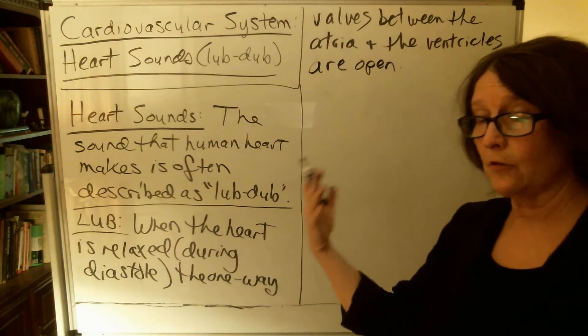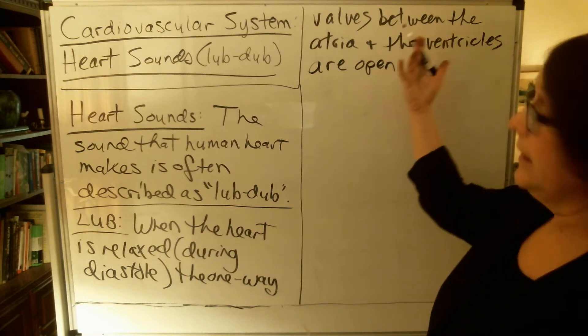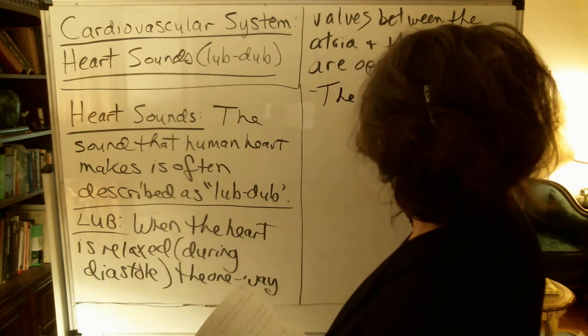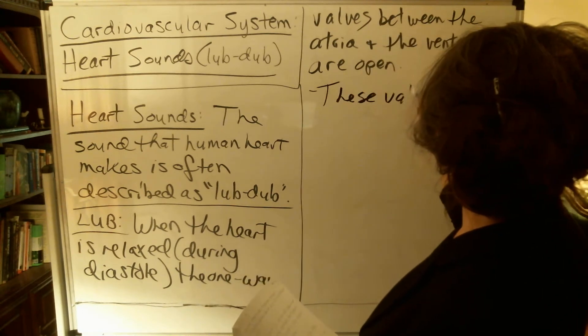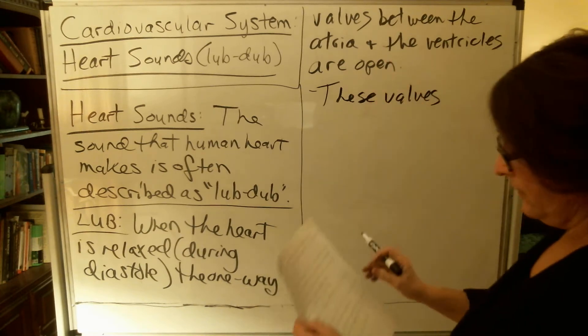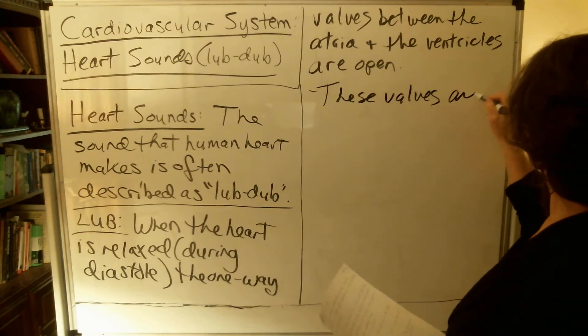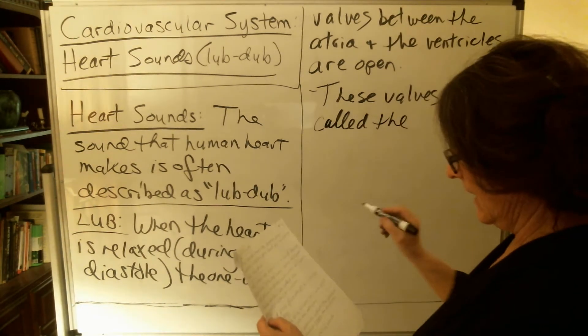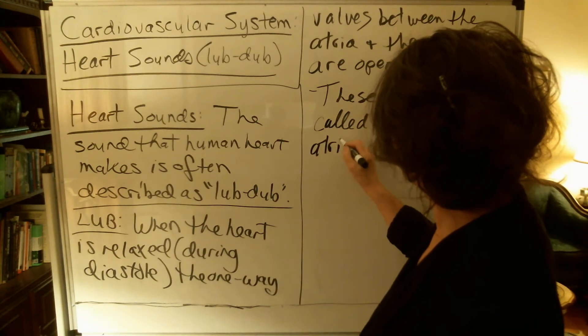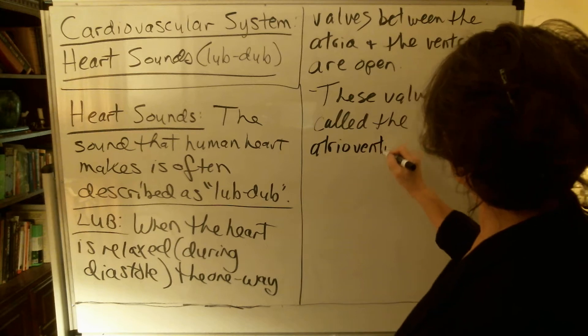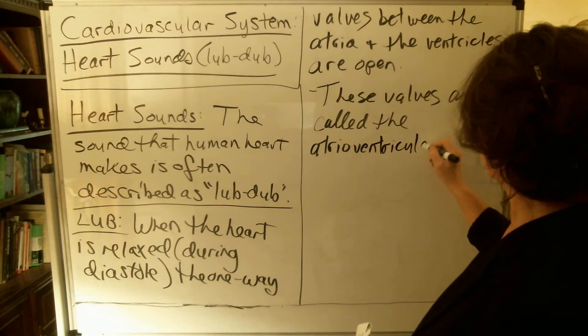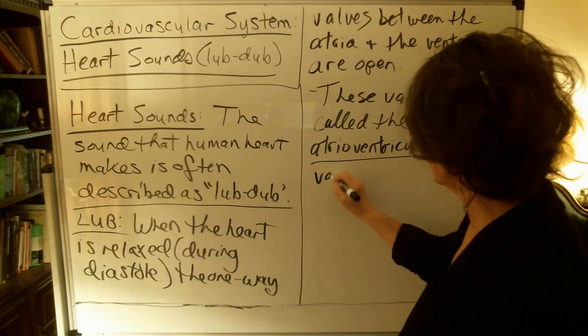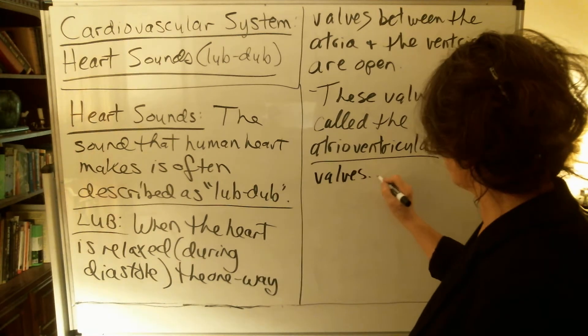So, the heart's relaxed, you have blood coming into it, and all of these valves are open. These valves between the atria and the ventricles are called, very handily, the atrioventricular or AV valves.